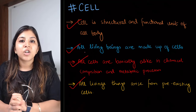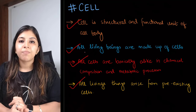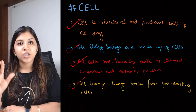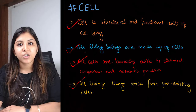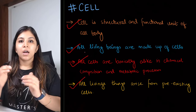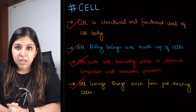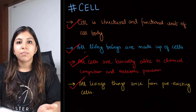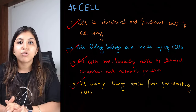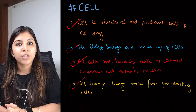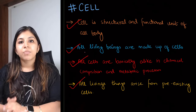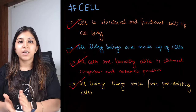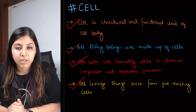Why do we say it is a structural and functional unit? Because every cell can independently function and it has its own specific function. Now, talking about organisms — if an organism is made of only one cell, we call it a unicellular organism, while if an organism is made of many cells, it will be called a multicellular organism.